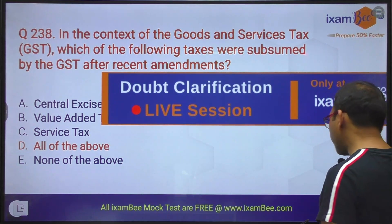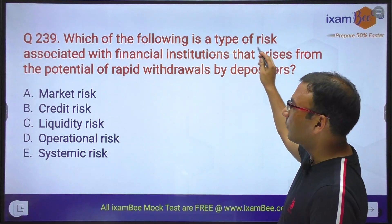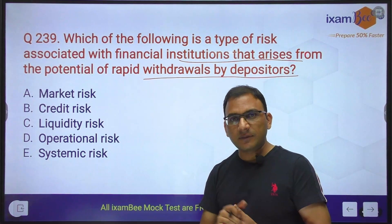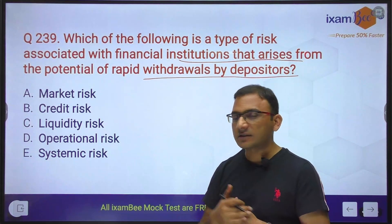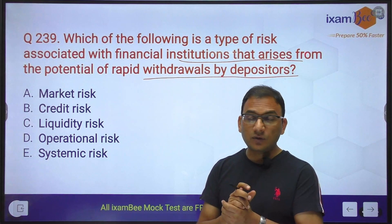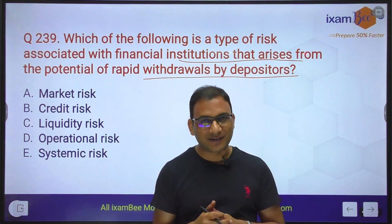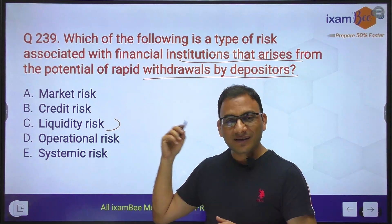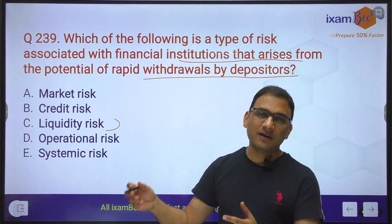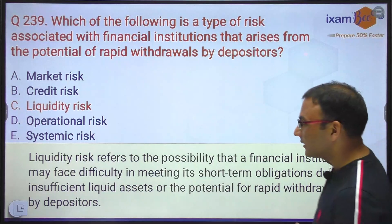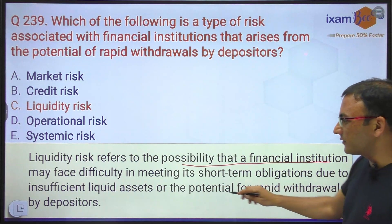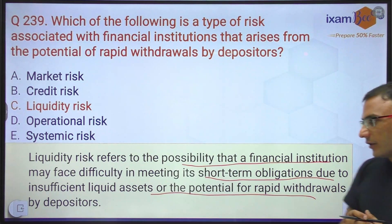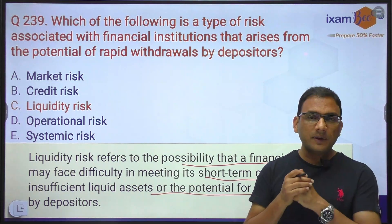As a conceptual question: which of the following is a type of risk associated with financial institutions that arises from the potential of rapid withdrawal by depositors? Right — liquidity risk — because the liquidity problem comes from the bank depositors and they have to give it back. Liquidity risk refers to the possibility that a financial institution may face difficulty meeting its short-term obligations due to insufficient liquid assets or the potential for rapid withdrawal by depositors — suddenly there was a run on the bank.